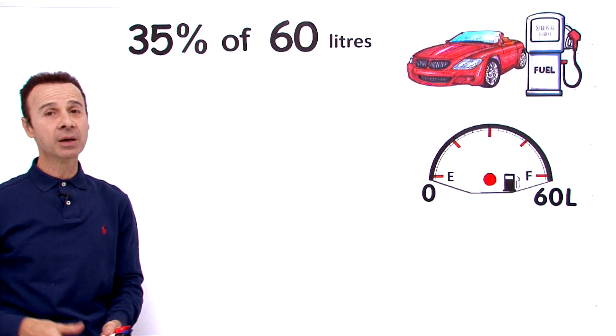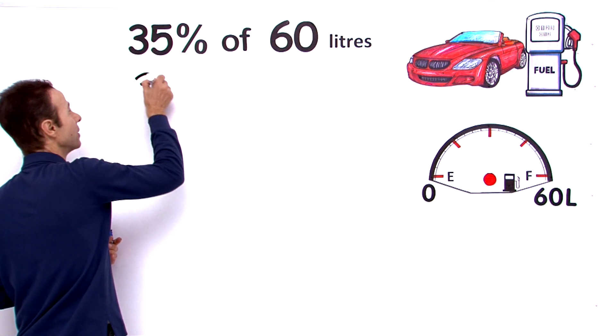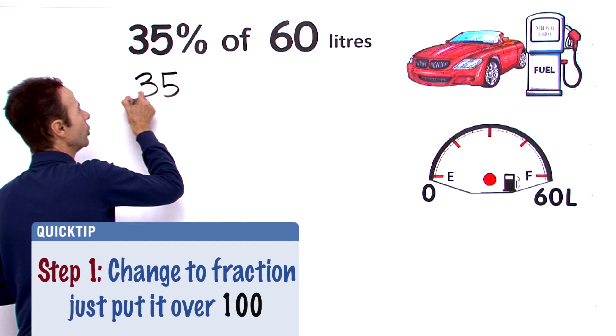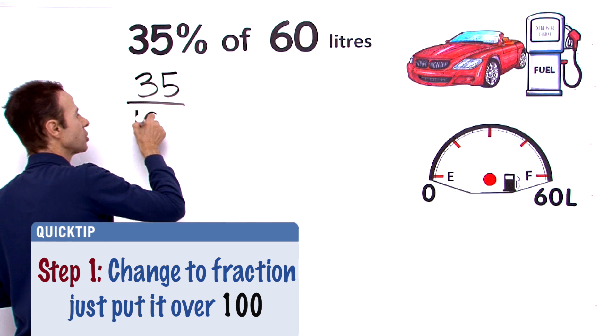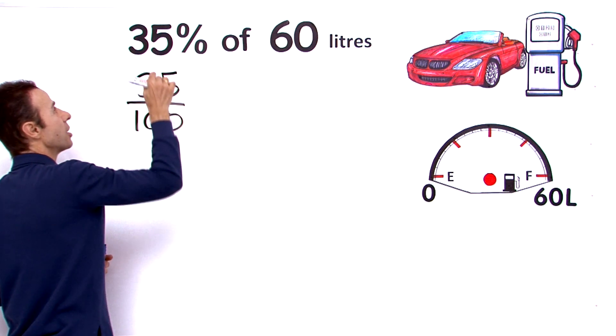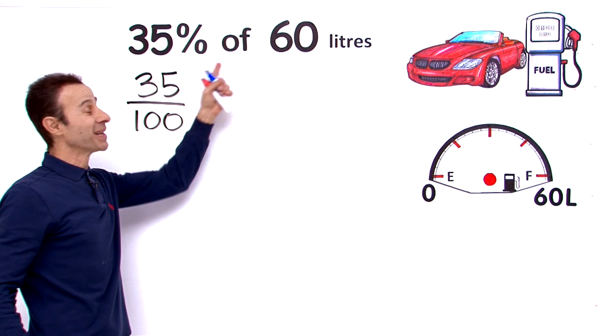One of the best ways to do that is take the 35 and put it over that percent, which is 100. Percent means 100 per 100. 35% is 35 over 100. Now, of means multiply.